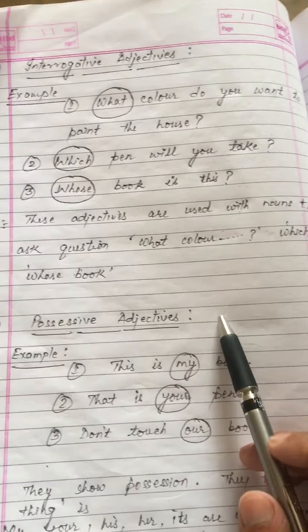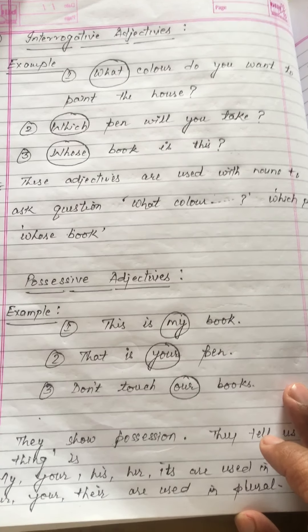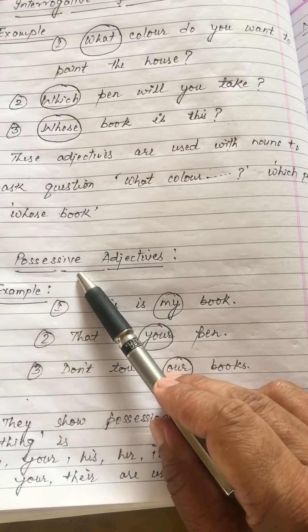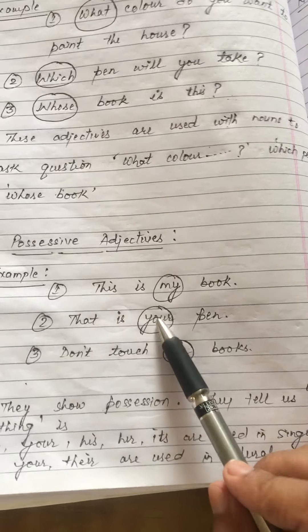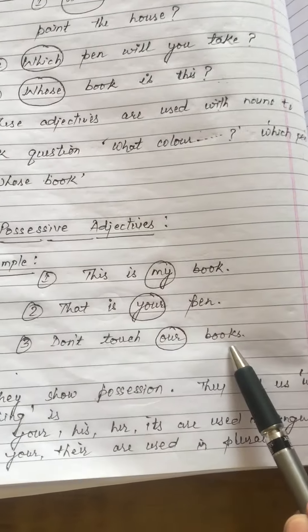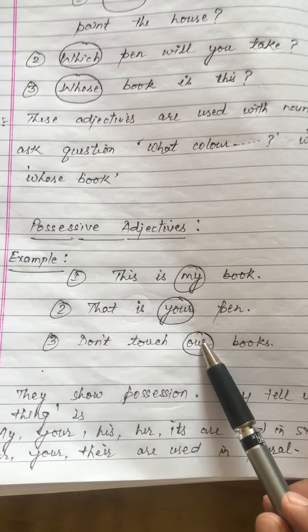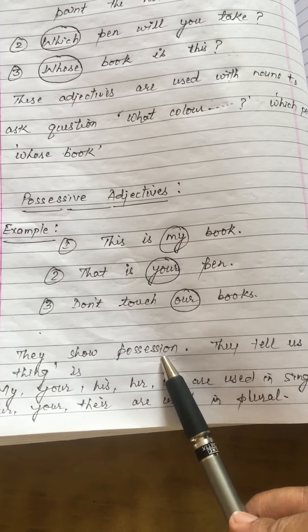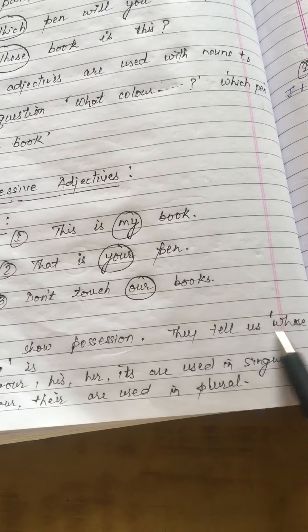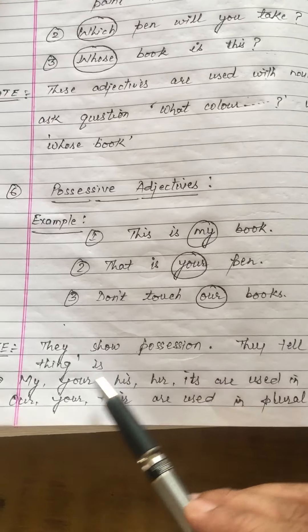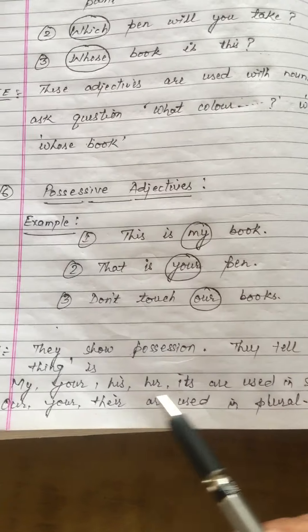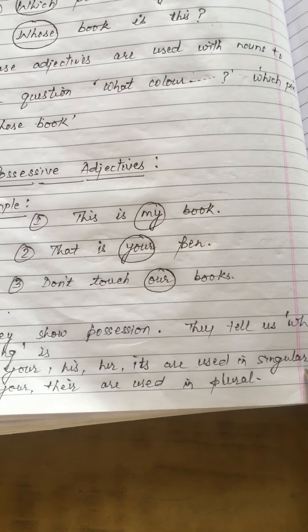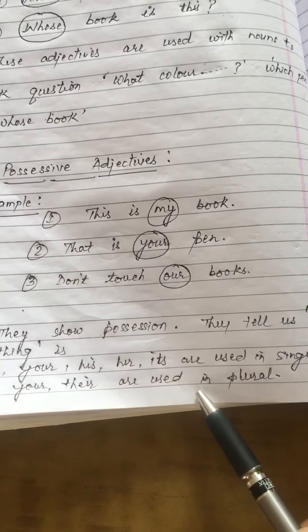The sixth type is Possessive Adjectives. As the name suggests, possessive means they show possession. Example: 'This is my book' — 'my' is your possessive adjective. Possessive adjectives tell us whose thing something is. Words used as possessive adjectives in singular form are: my, your, his, her, its. Their is used in plural form.